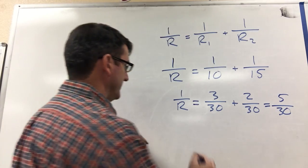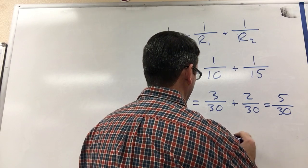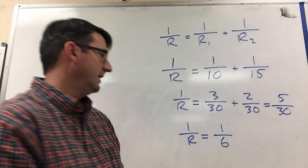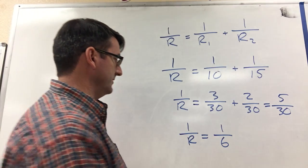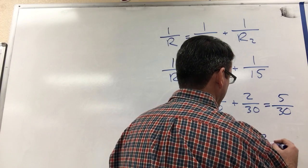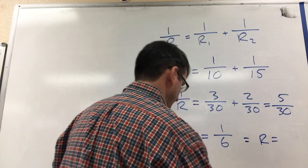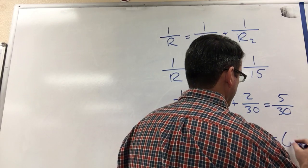5 thirtieths is the same as 1 sixth, so 1 over R is equal to 1 over 6. Now we can take the reciprocal of both sides. So if 1 over R is equal to 1 over 6, then R is equal to 6.